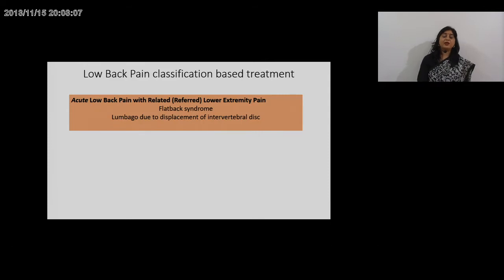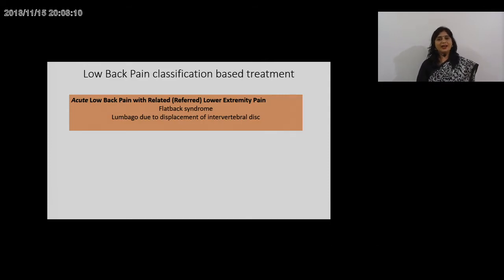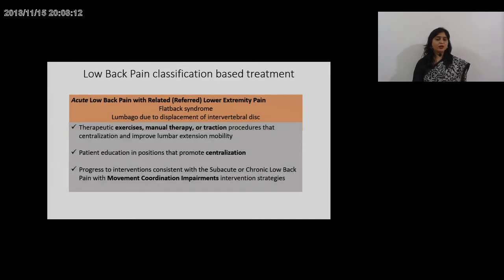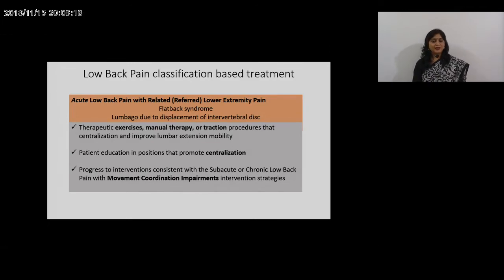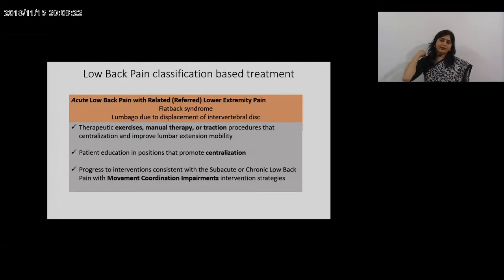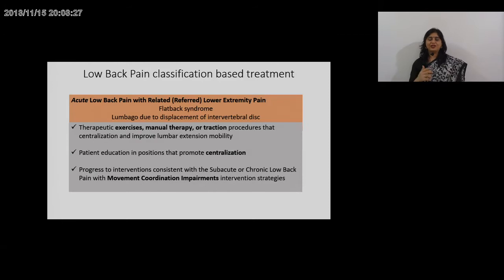The next category is acute low back pain with referred pain, the flat back syndrome or lumbar lordosis. Here, therapeutic exercises, manual therapy, or traction procedures that centralize or improve lumbar extension mobility are advocated. Patient education on positions that promote centralization should be taught so that these exercises can be performed independently.